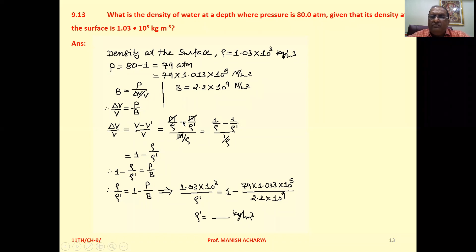So M by rho minus M by rho dash over M by rho. M by rho cancels, so 1 over rho minus 1 over rho dash, over 1 by rho.